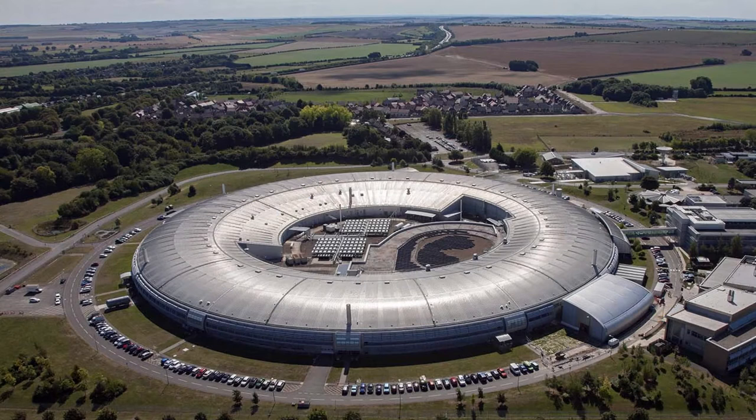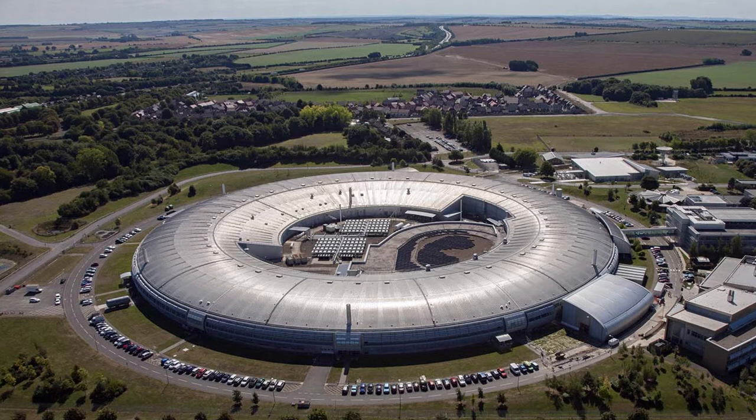This is Diamond Light Source, the UK's national synchrotron facility. You will notice the tiny cars in the foreground. This oval-shaped ring has a circumference of more than half a kilometer. Diamond Light Source accelerates electrons and has been up and running since 2007. An imminent upgrade of the synchrotron, Diamond 2, requires designing a new electron beam stabilization controller. What is the purpose of the synchrotron and why does it need such a controller?